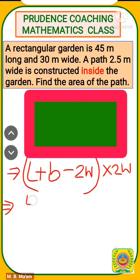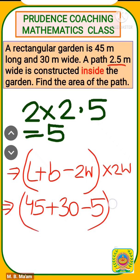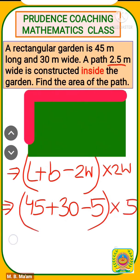So let's find out. As you can see, I have kept the same data. So here you will get 45 as length, breadth here is 30, minus 2W. Here 2W means 2 into 2.5, that is you will get here 5, multiplied by 5.